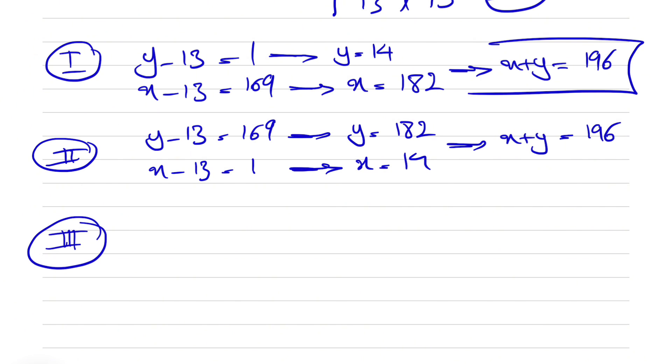And the last scenario, we have y minus 13 is equal to 13 and x minus 13 also 13. So our y will be 13 plus 13 or 26, and we get the same value for x, 26. And here, our x plus y is basically 26 times 2, which will be 52.